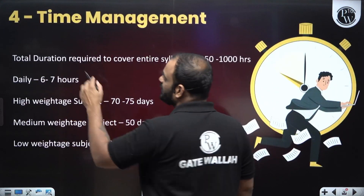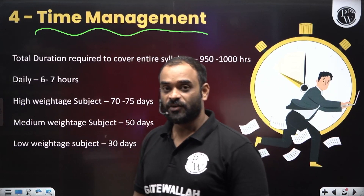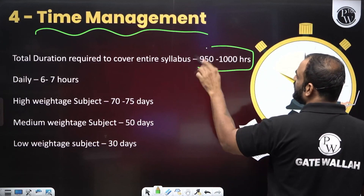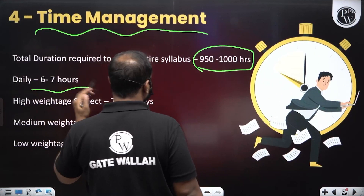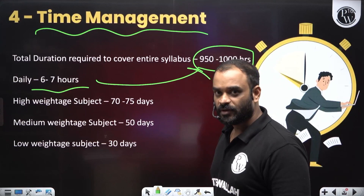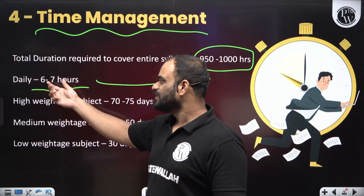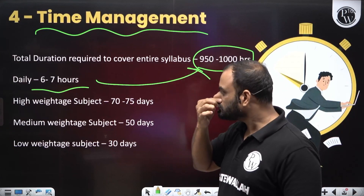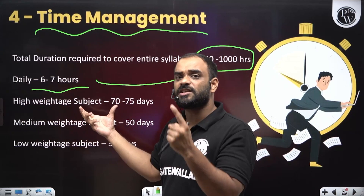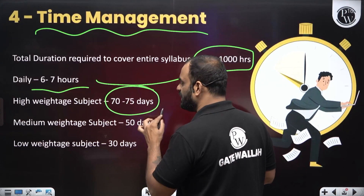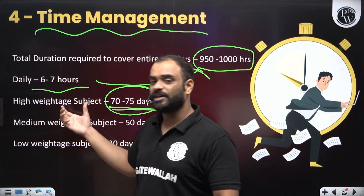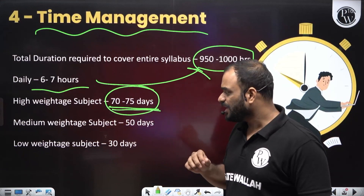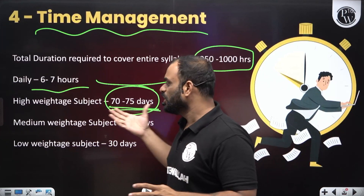Finally, we will discuss time management — how to manage your time to cover the entire GATE syllabus. The total duration required to cover the entire syllabus is approximately 950 hours. If you are giving 6 to 7 hours daily, it is very easy to cover this in the upcoming 6 months — you can calculate: multiply 6-7 hours by 150 to 180 days. To cover the high-weightage subjects, approximately 70 to 75 days are required, according to the time duration of individual subjects.